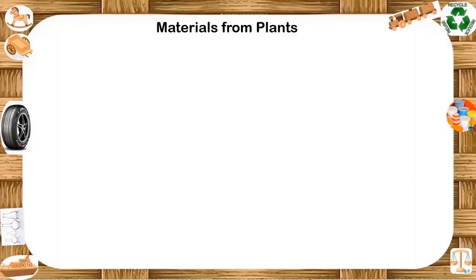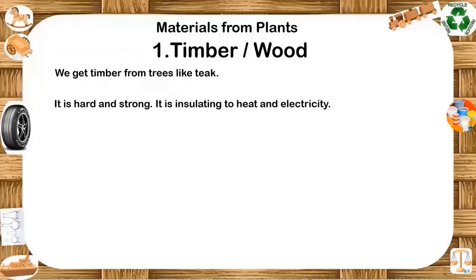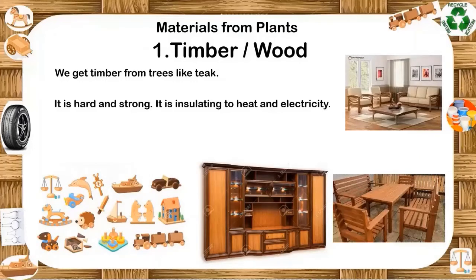Timber or wood. We get timber from trees like teak. It is a porous and fibrous tissue found in stems and roots of trees and other woody plants. Wood is a multi-purpose asset given by nature to humans. It is hard and strong, and insulating to heat and electricity. It is used as a fuel, as a construction material, and for making tools and weapons, furniture and paper.